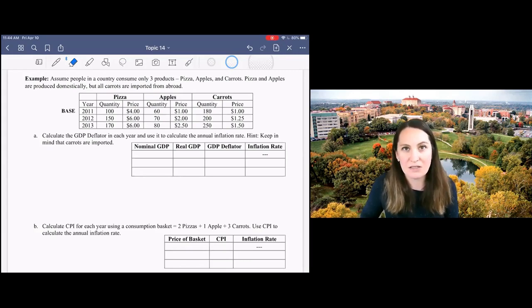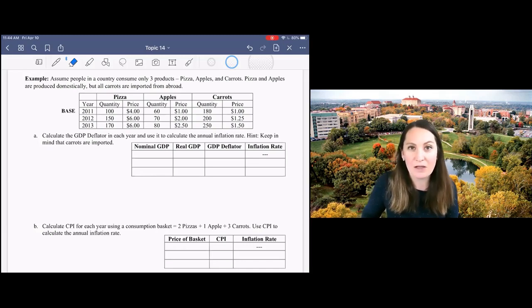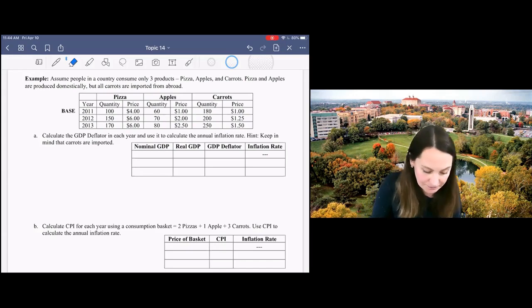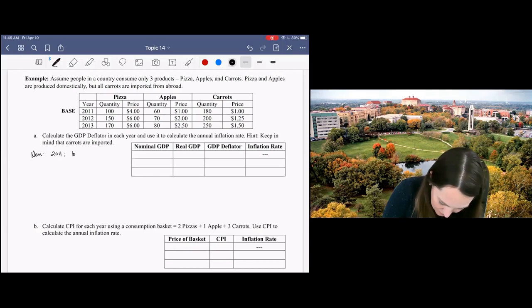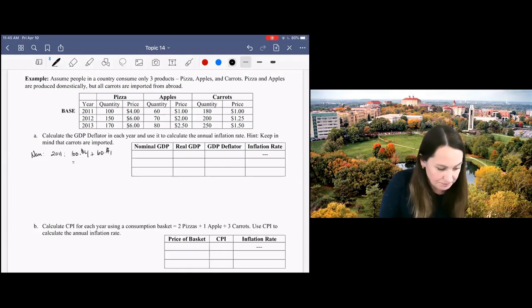So the first thing we need to do is calculate nominal GDP. For GDP remember we only want to include things that are produced domestically, so we're going to ignore the carrots. For 2011 we've got 100 pizzas times $4 plus 60 apples times $1, and that gives me $460 for nominal GDP.